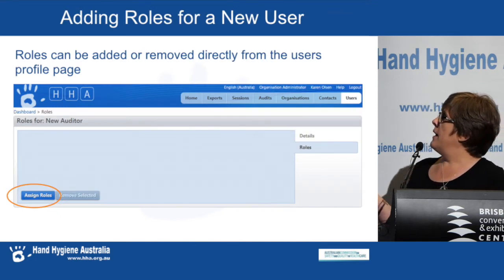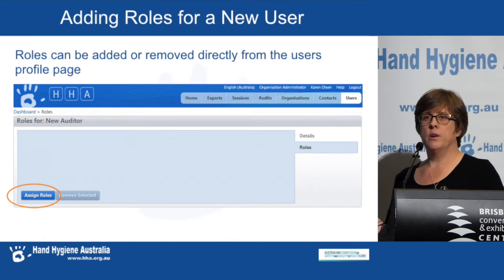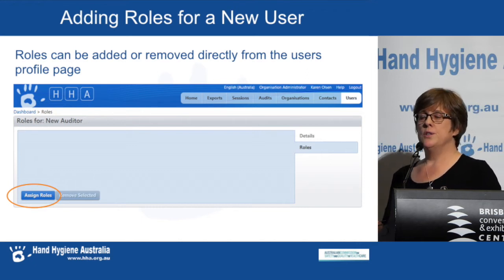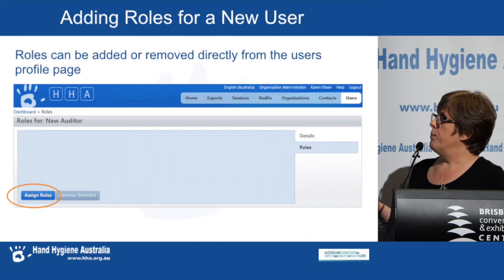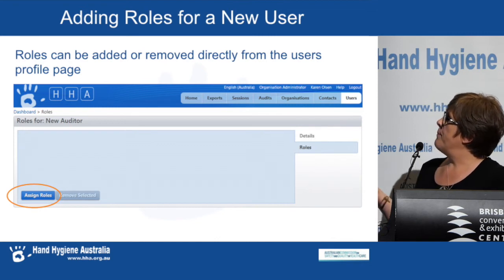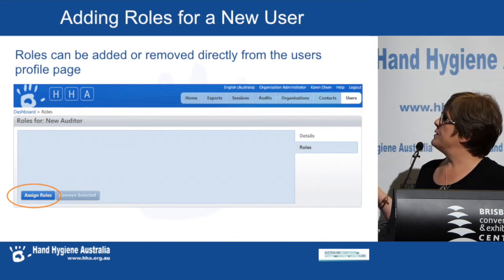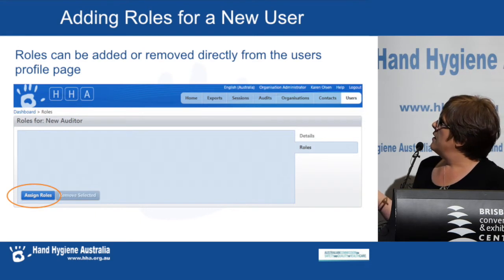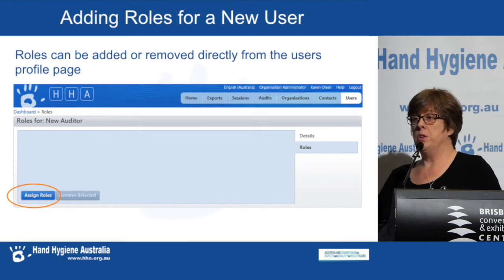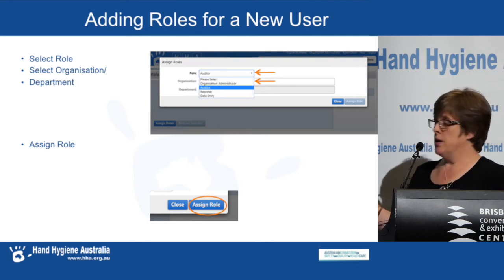Roles will be able to be added or removed directly from the user's profile page. This differs from previously where you had to go to the organisation page to add or detach users. You open up that user page, click the assign roles button, and you'll get a page where you allocate what role you want that person to have. In this example, the person is being allocated as an auditor, then you add the organisation or department, and click assign roles.